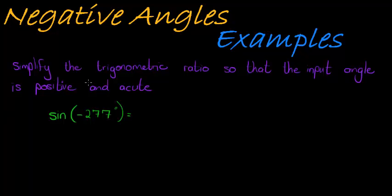Okay, so basically we are asked to simplify the trigonometric ratio so that the input angle is positive and acute. Here we can see that the input angle for our sine function is negative 277 degrees.